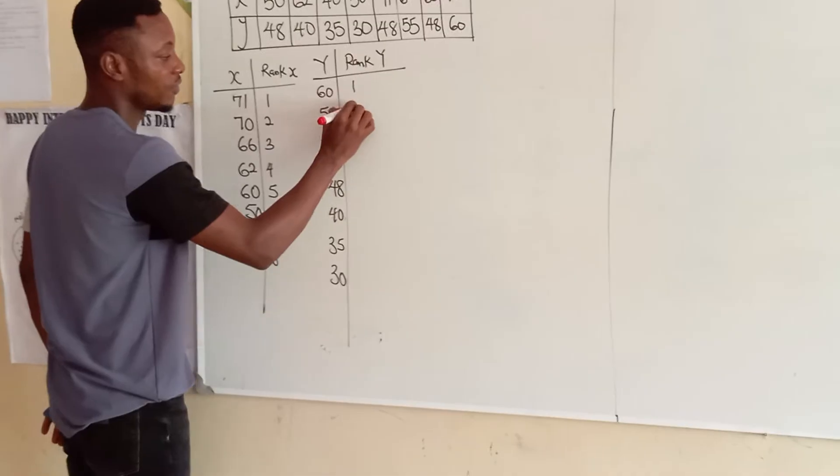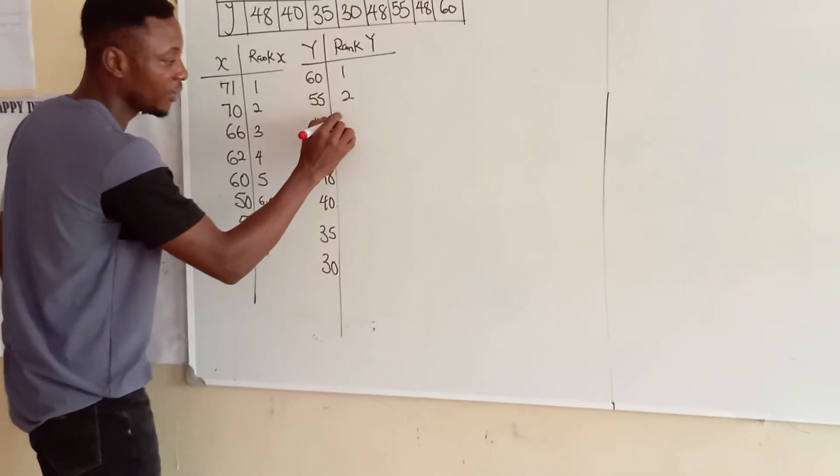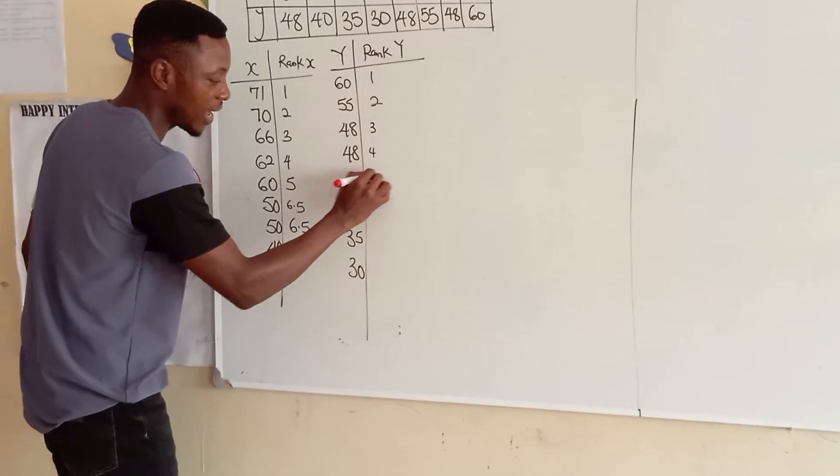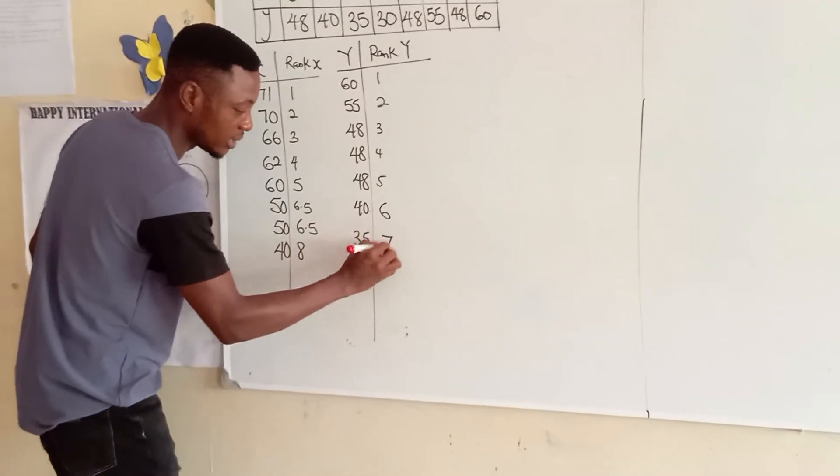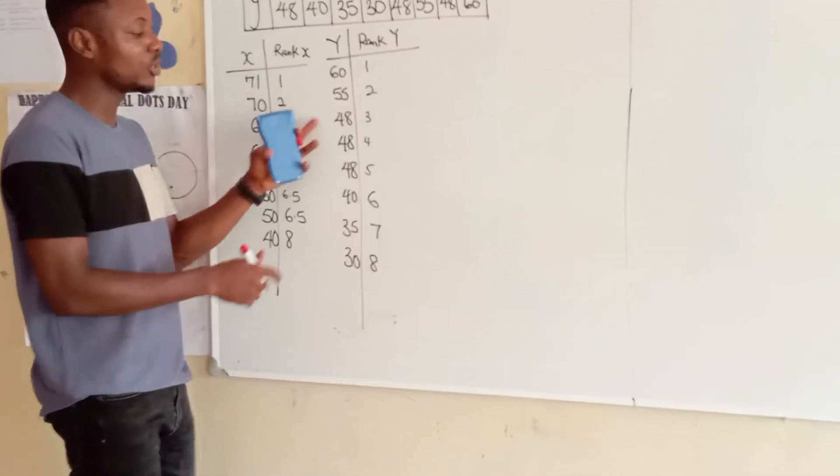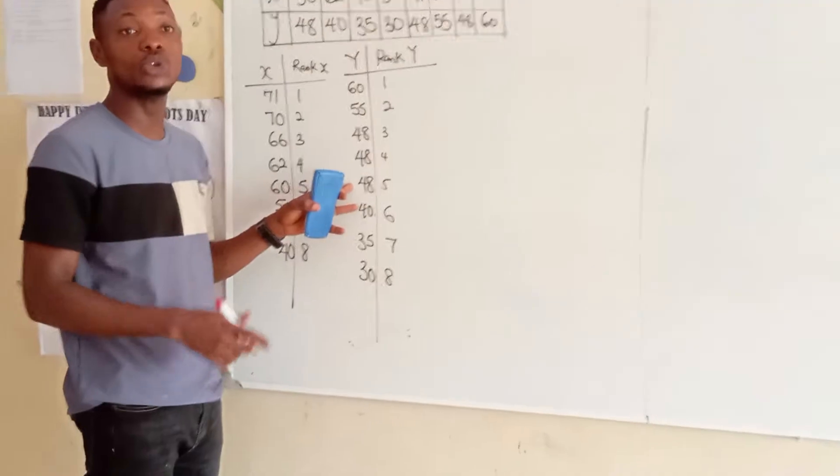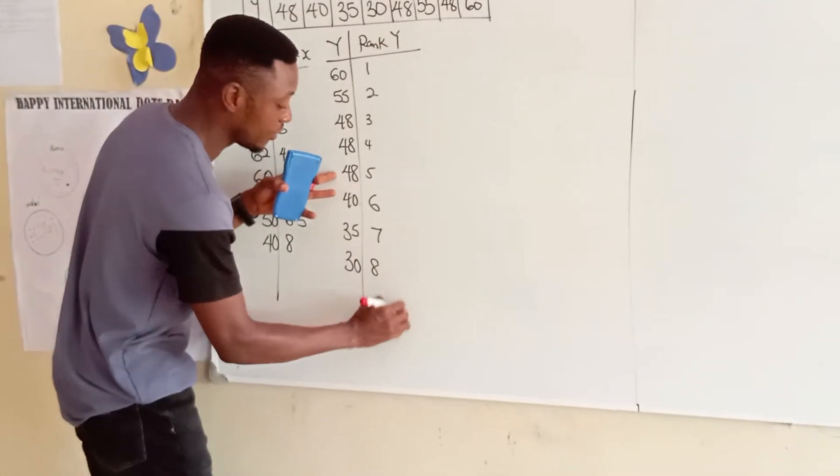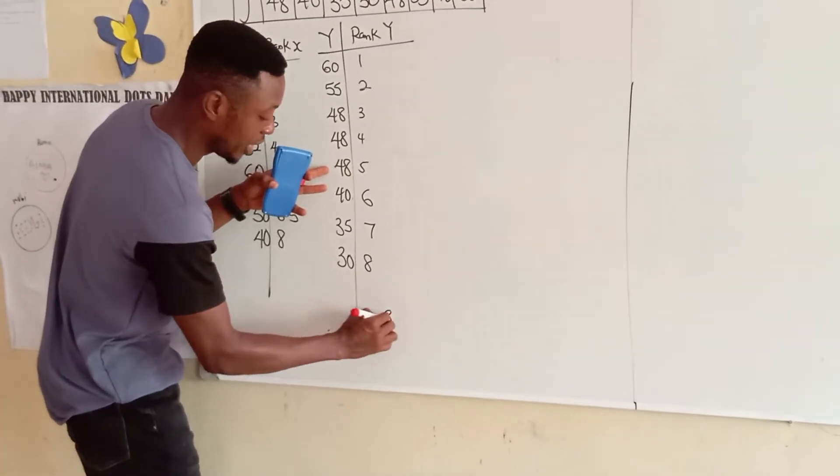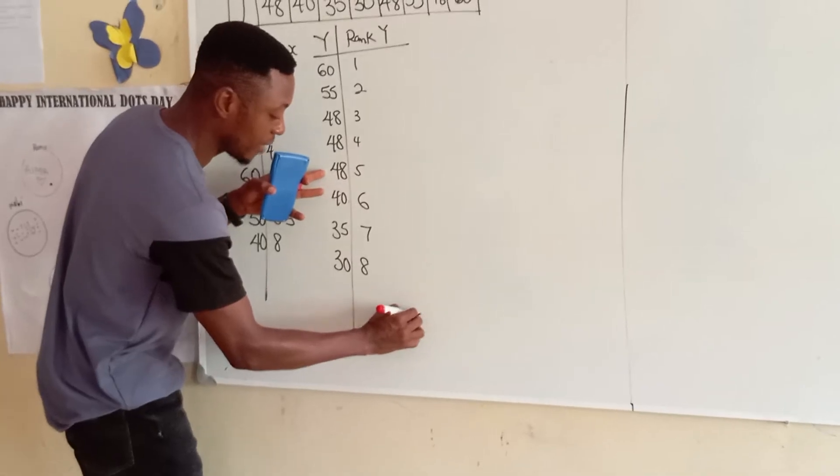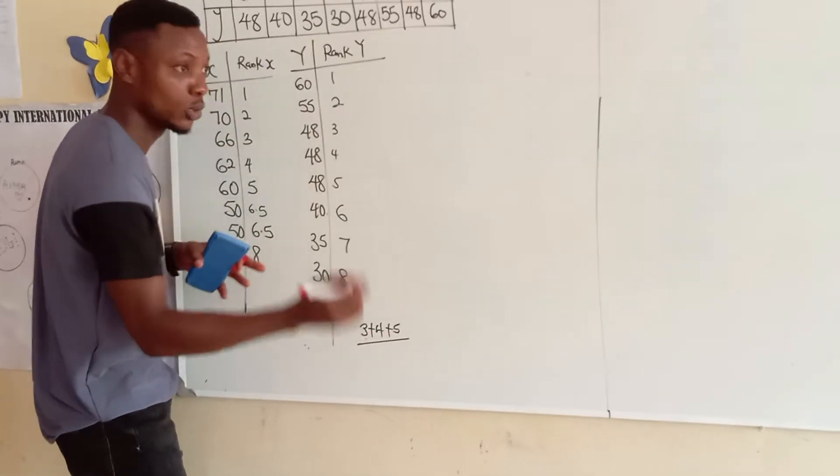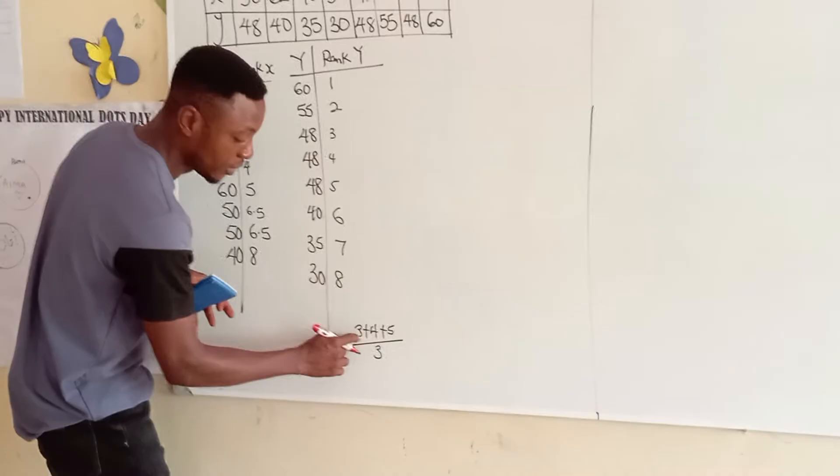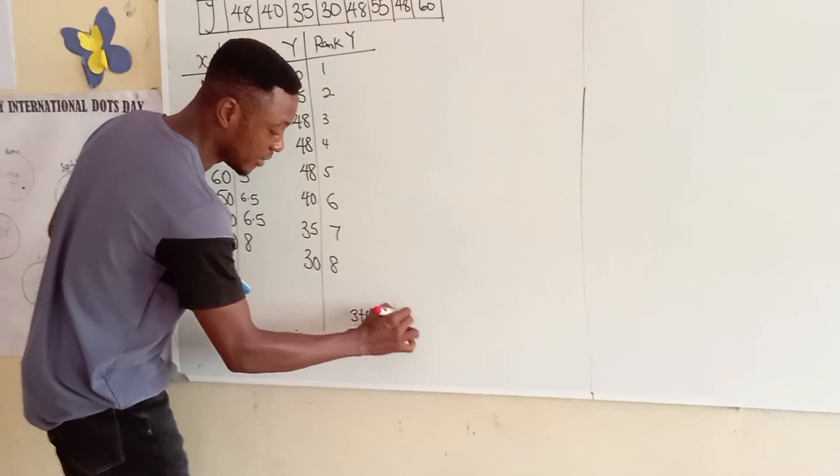So, 60 is 1. 55 is 2. This is 3, 4, 5. This is 6. This is 7. This is 8. Mind you, these have the same scores. So, what do we do? We look for the average. How do we look for the average?